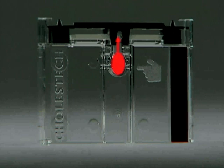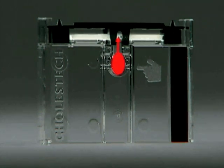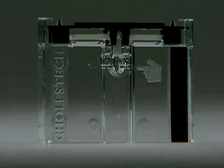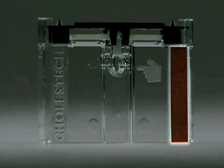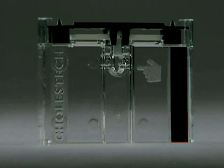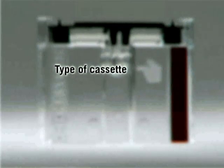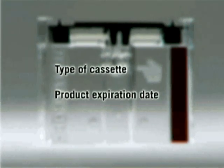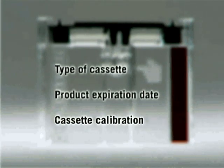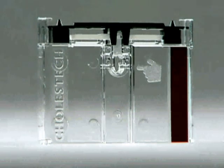Within minutes, the white pads on the reaction bar change color. The darker the color, the more analyte is present. The magnetic stripe is read by the analyzer and provides information on the type of cassette, the product expiration date, and cassette calibration. Avoid touching the magnetic stripe and the reaction bar. See the package insert for proper storage and handling information.